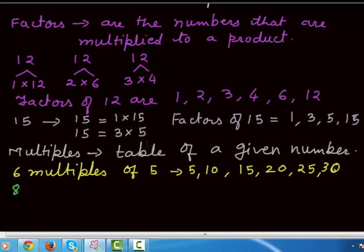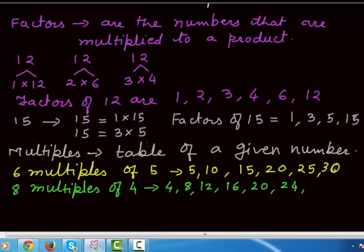Suppose we write the 8 multiples of 4. So we will write the table of 4: 4 times 1 is 4, 4 times 2 is 8, 4 times 3 is 12, 4 times 4 is 16, 4 times 5 is 20, 4 times 6 is 24, 4 times 7 is 28, 4 times 8 is 32. So these are 8 multiples of 4. Thank you.